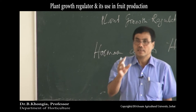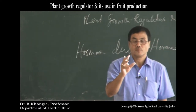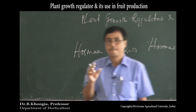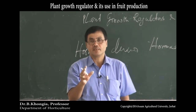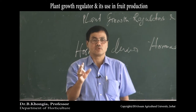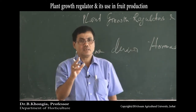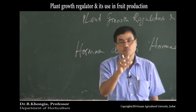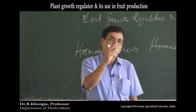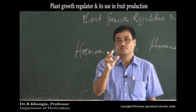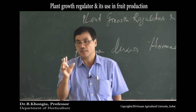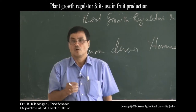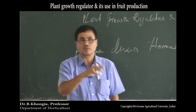The definition of plant growth regulators: they are organic substances which promote, inhibit, or modify the physiological processes in the plant when used in small concentration. Their site of production differs from their site of action. All hormones are growth regulators, but all growth regulators are not hormones.